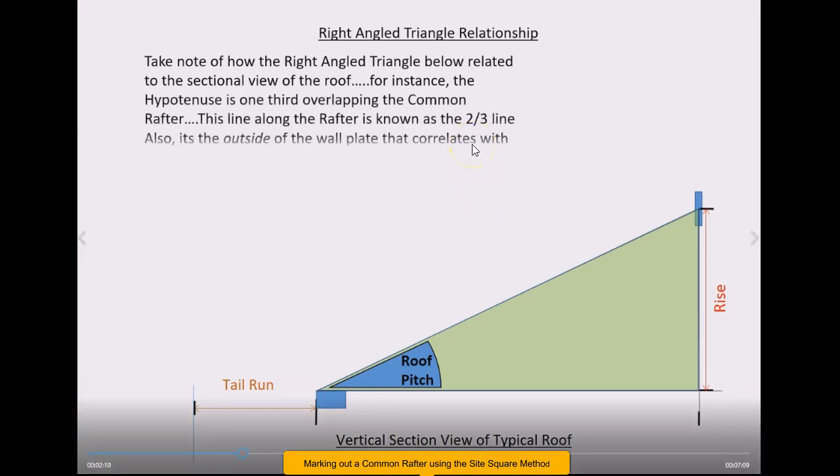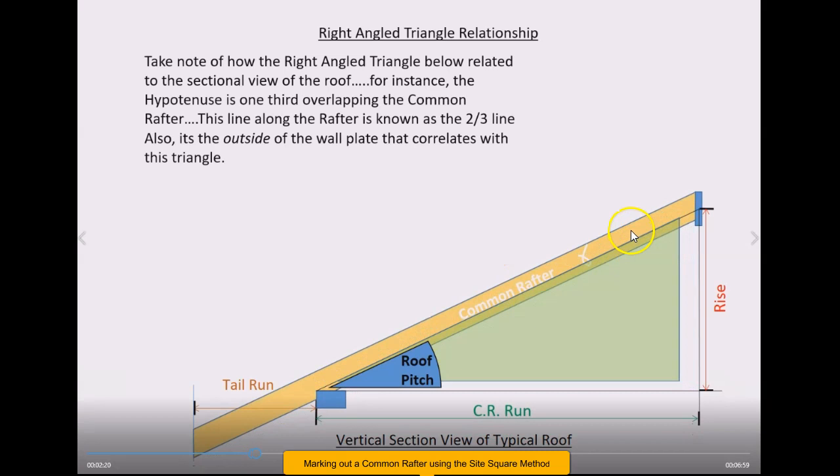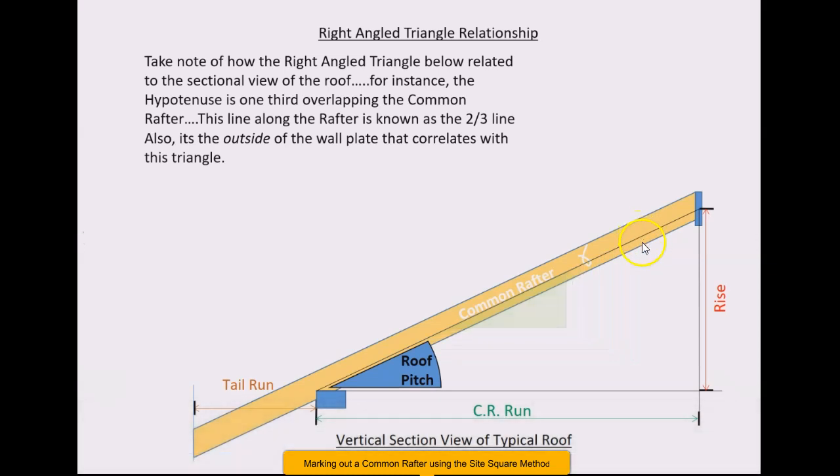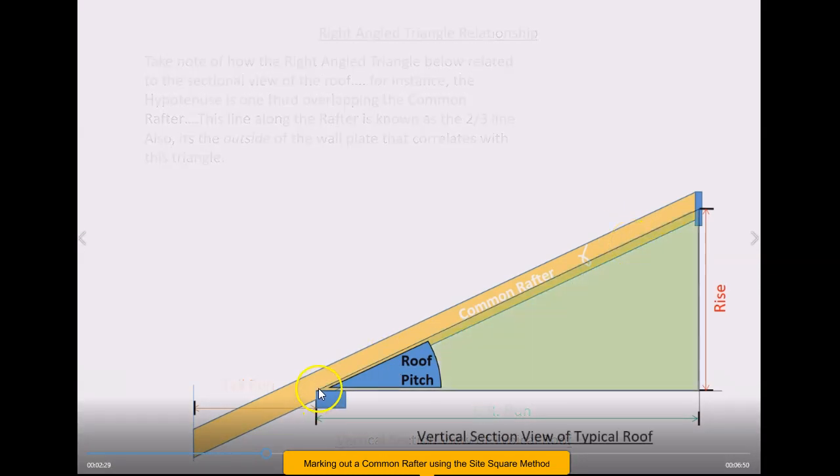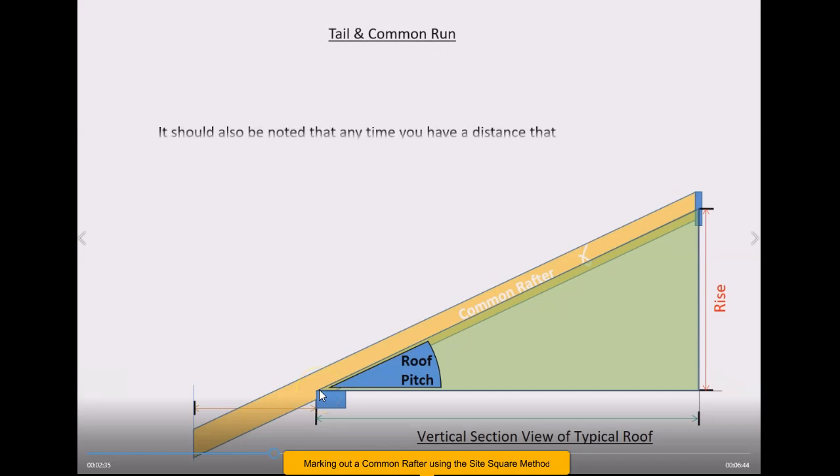Just another illustration here to illustrate the right angle triangle relationship that's present in your typical pitch roof. Just remember that this is called the two-thirds line here, the hypotenuse of the right angle triangle, and that's how the rafter actually relates to it. So that line is two-thirds or two-thirds one-third into the rafter from below or two-thirds above in other words. Just bear that in mind, and that point comes to the outside of the wall plate, by the way, of that right angle triangle, not to the inside.